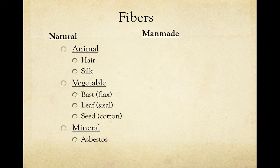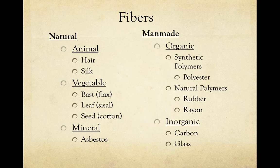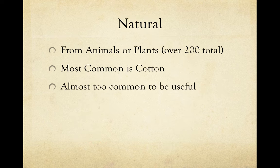Natural fibers are broken into animal, vegetable, and mineral fibers, and man-made fibers are further organized into organic and inorganic fibers. Natural fibers generally come from animals or plants, and there are over 200 types of natural fibers.